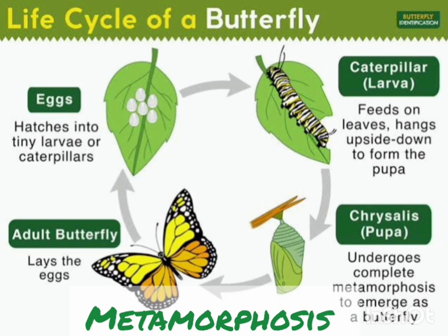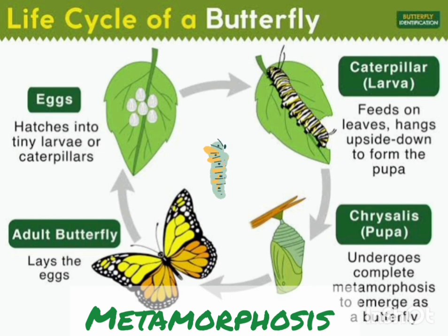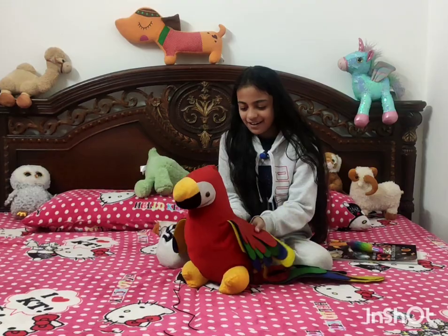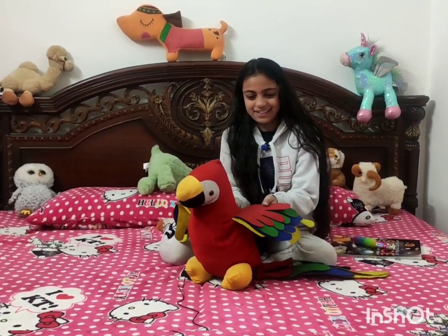Now, metamorphosis — do you remember from my previous video? A metamorphosis is a dramatic change that some animals and insects go through during their life cycles. The change is dramatic, and the baby stage looks very different from the adult stage. So I hope you learned the life cycle of the butterfly!